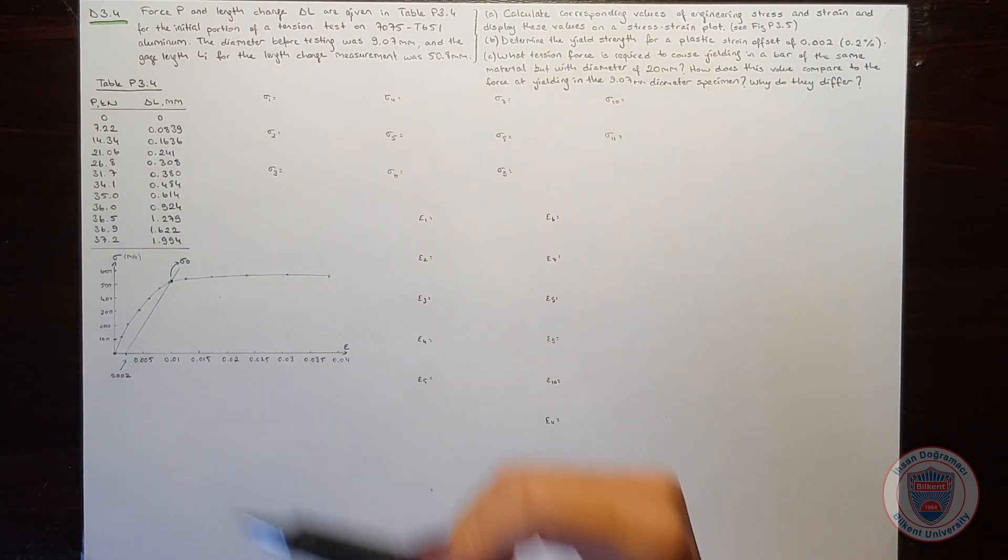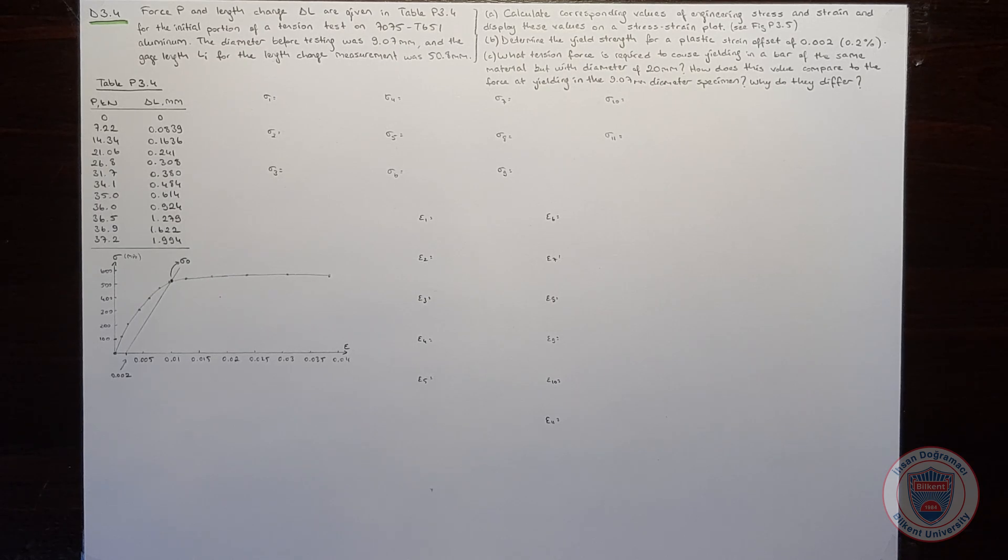We have force and length change measurements from a tension test on 7075 T651 aluminum. In part A, we are going to calculate corresponding values of engineering stress and strain and display these values on a stress-strain plot.